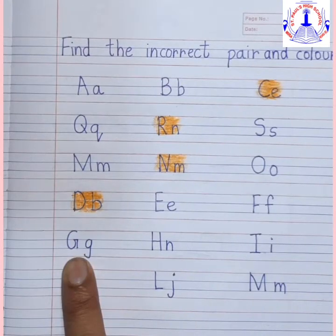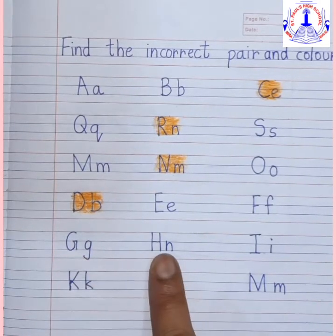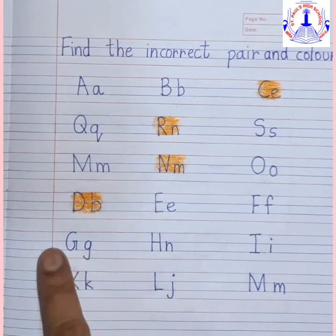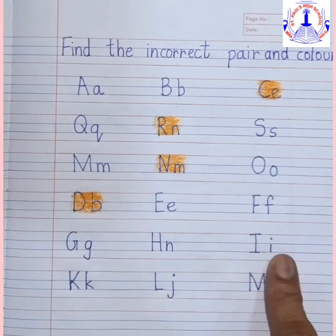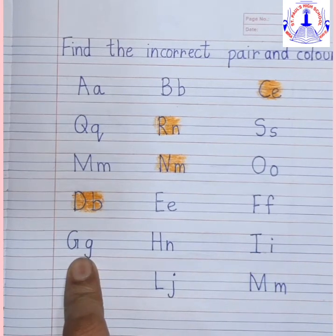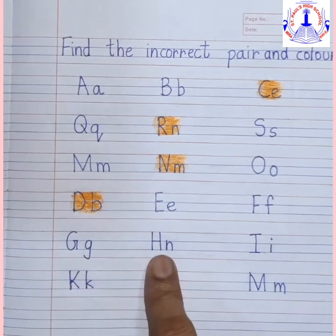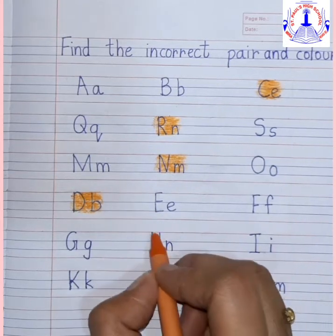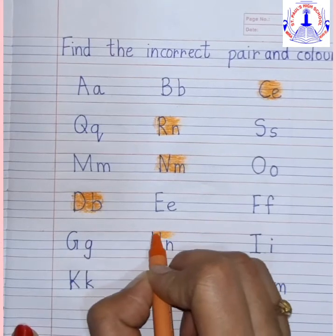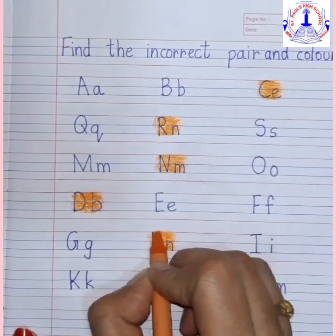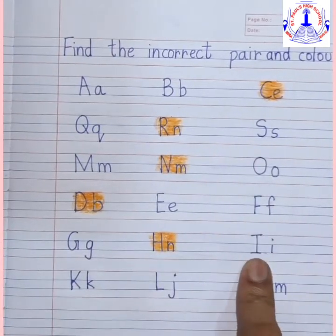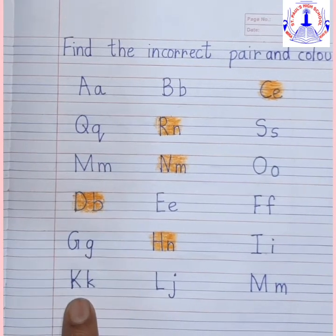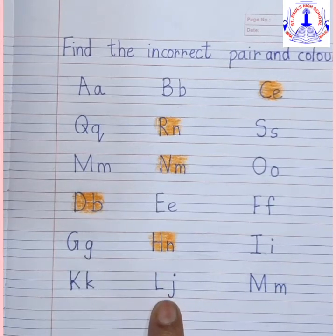Now: capital G, small g, capital H, small n, capital I, small i. Can you all tell me which one is the incorrect one? Is this incorrect? No, this is correct. Is this incorrect? Yes! Because this is capital H and small n — so this is the incorrect pair and we have to color it.